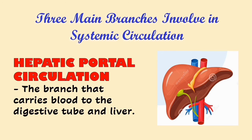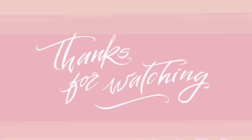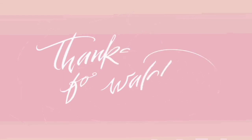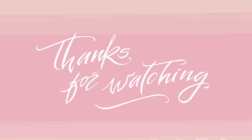Those are the two types of blood circulation: the pulmonary circulation and the systemic circulation. That is how our heart works. That's all for today. Thank you so much for watching. See you on the next lesson.